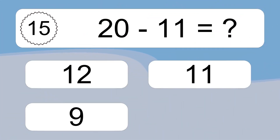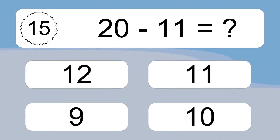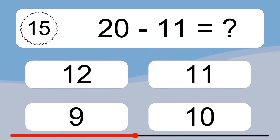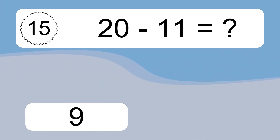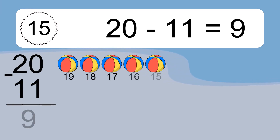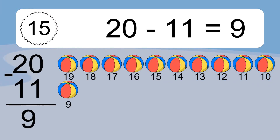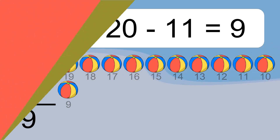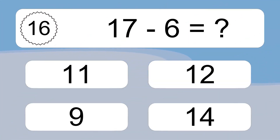20 minus 11 equals what? 15 minus 9. Let's count it. 19, 18, 17, 16, 15, 14, 13, 12, 11, 10, 9.